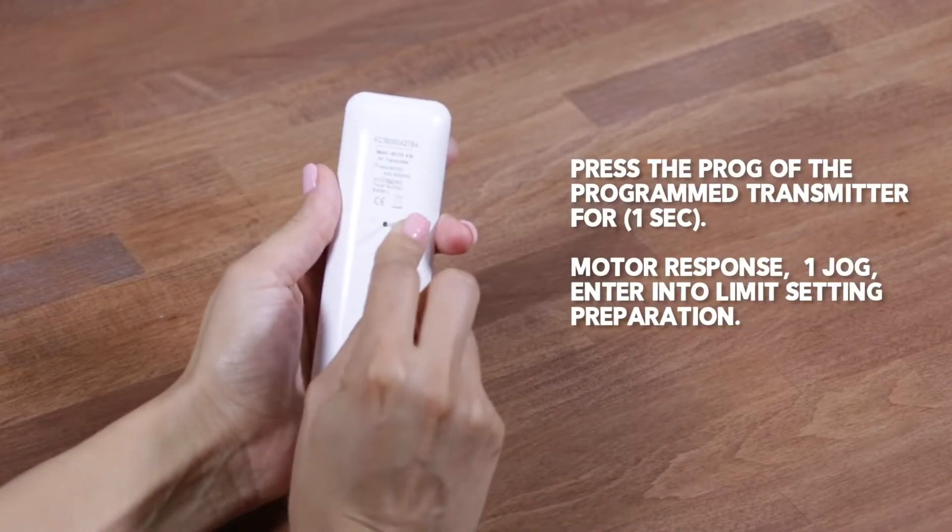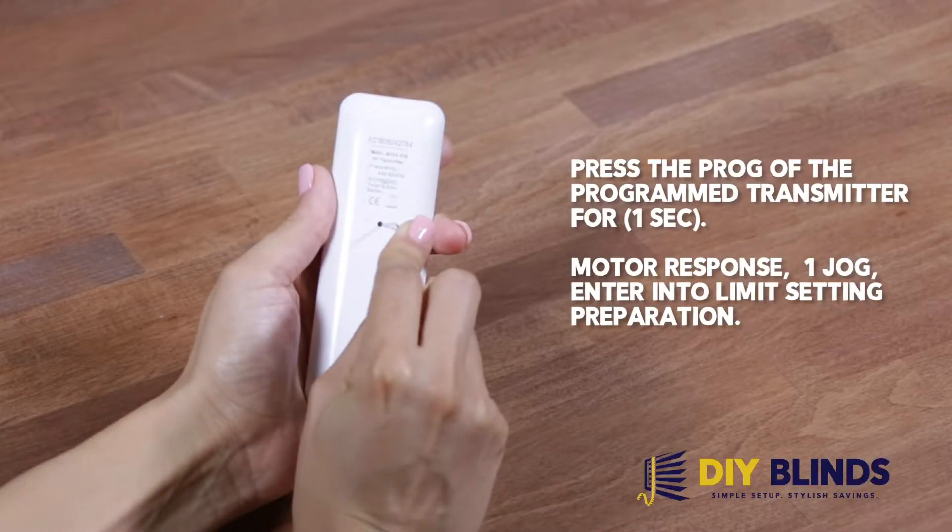Press the prog button on the program transmitter for 1 second. Motor responds with 1 jog. Enter into limit setting preparation.